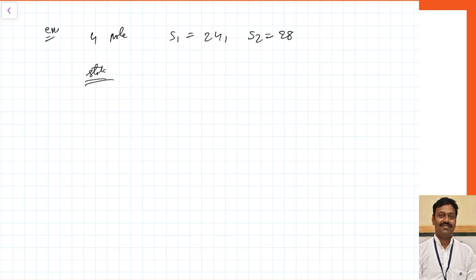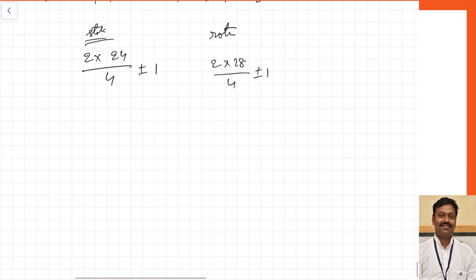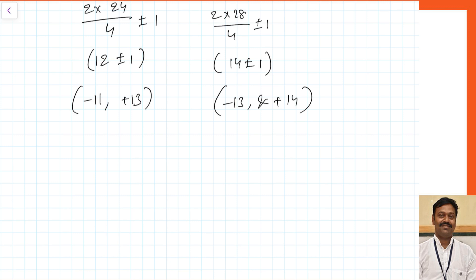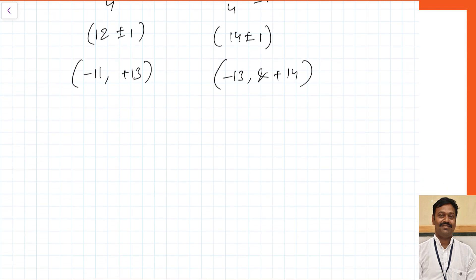Stator will produce harmonics of order 2×(24/4) ± 1, giving orders of 12 ± 1, i.e., the 11th and 13th harmonics. Similarly, the rotor will produce 2×(28/4) ± 1, giving orders of 14 ± 1, i.e., the 13th and 15th harmonics. The stator produces −11 and +13, the rotor produces −13 and +15. Remember these are not time harmonics — these are space harmonics, which actually induce poles; the number of poles increases.